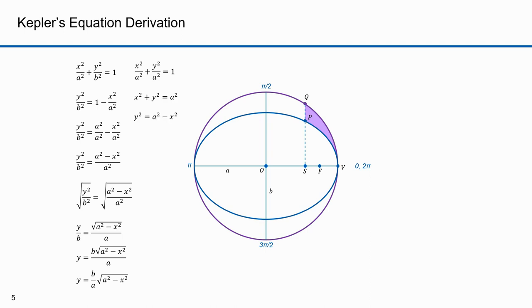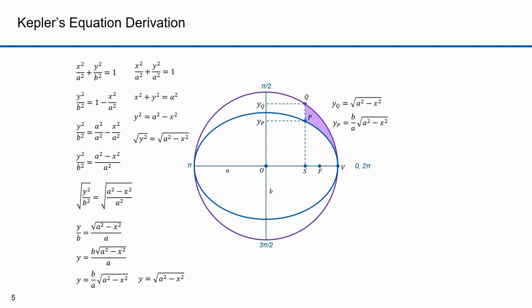Here's the Y value of point P: it's Y equals B over A times the square root of A² minus X². Here's the Y value for Q: it's the square root of A² minus X². Both equations share the common term — the square root of A² minus X². The Y coordinate of P, the point on the ellipse, is B over A times the Y coordinate of Q, the point on the circle.